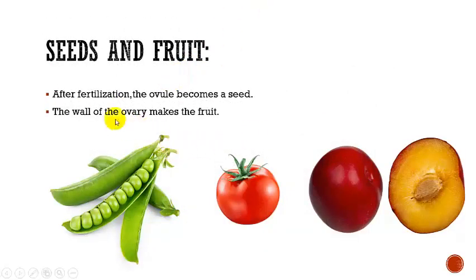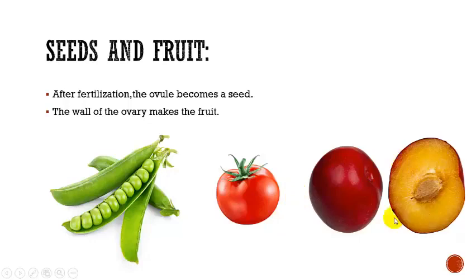After fertilization is complete, the ovule becomes a seed, and finally the seed becomes a fruit. The wall of the ovule makes the fruit. The ovule may become dry, like a pea pod or a bean, or it may become thick and fleshy, like a tomato, peach, or mango. So this is how reproduction occurs in flowers.